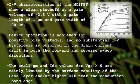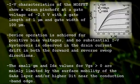The small Gm and Ids values for Vgs greater than 0 are mainly limited by the surface mobility of the gallium arsenide layer and/or higher DIT near the conduction band edge.